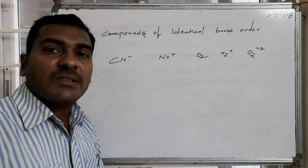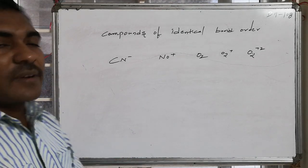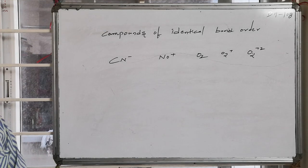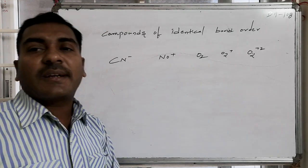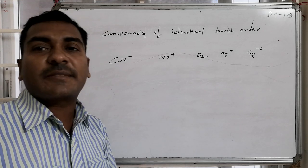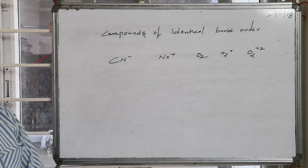In the given list of compounds, you are asked to identify the compounds of identical bond order. Bond order is related with the number of electrons. Species with same number of electrons, that is isoelectronic species, are maintaining the same bond order.